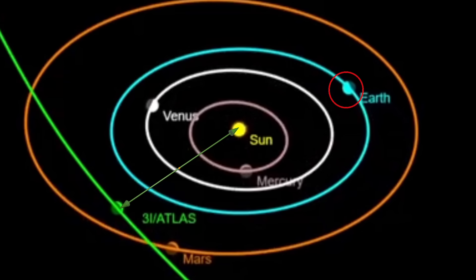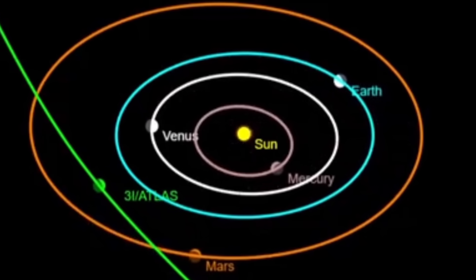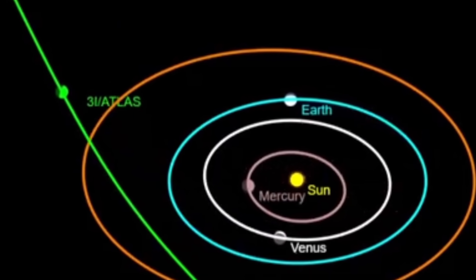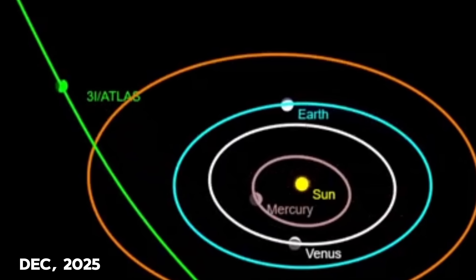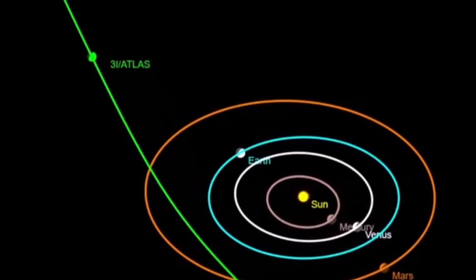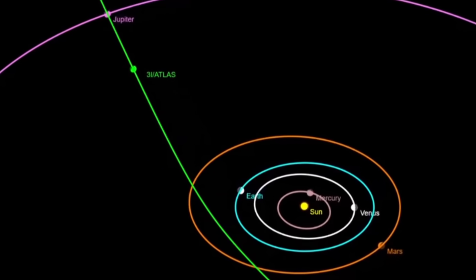Earth, however, will be on the opposite side of the sun during this flyby, so there's no danger of the object coming anywhere near us. Its closest approach to Earth is expected in December 2025, just as this interstellar object begins its journey out of our solar system for good.